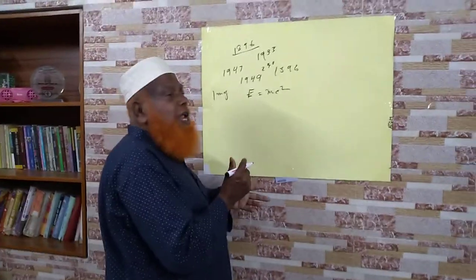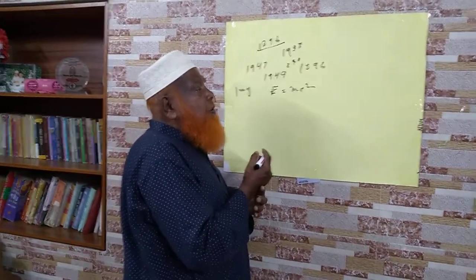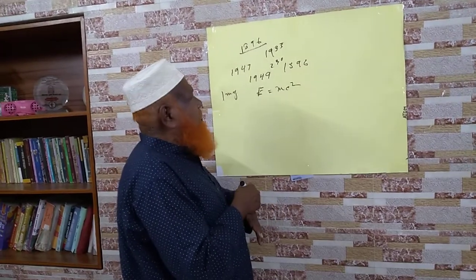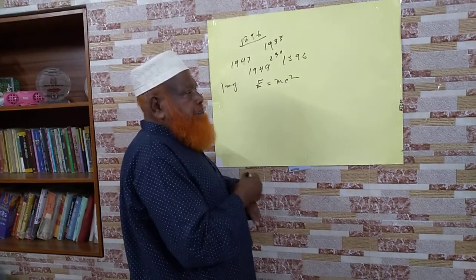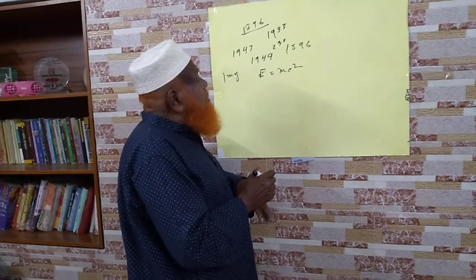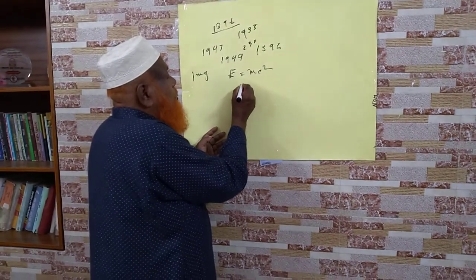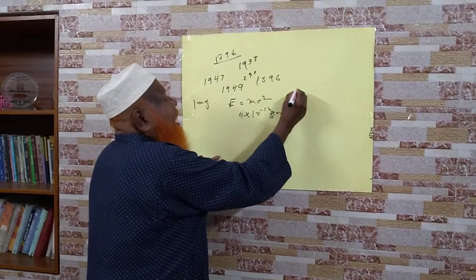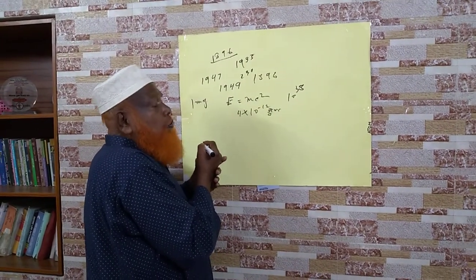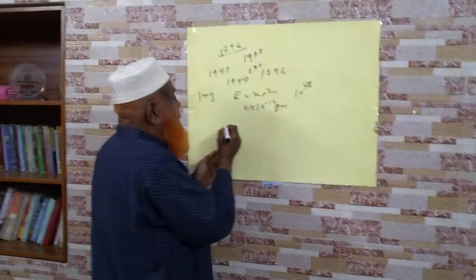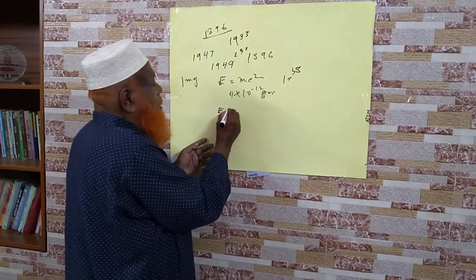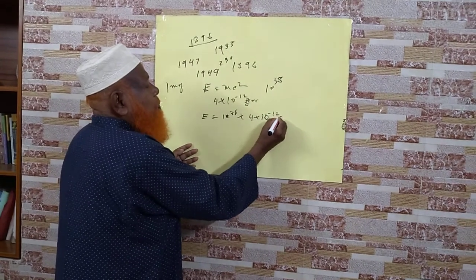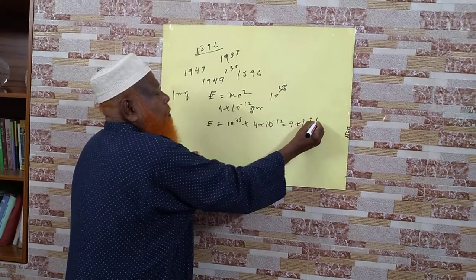There are two types of nuclear reaction: nuclear fission and nuclear fusion. Nuclear fission is when a nucleus is bombarded by some particles, it breaks up into two parts and some mass is converted into energy. Nuclear fission is used to make atom bombs. Nuclear fusion occurs on the surface of the sun — when four hydrogen atoms are fused into a helium nucleus, some mass is converted into energy, equal to 4 × 10⁻¹² joules. It has been found that 10³⁸ helium nuclei are produced per second on the surface of the sun. So energy produced per second on the surface of the sun is 10³⁸ × 4 × 10⁻¹² = 4 × 10²⁶ joules.